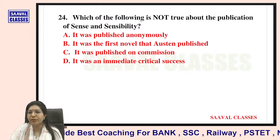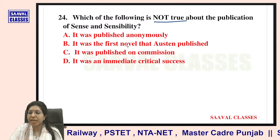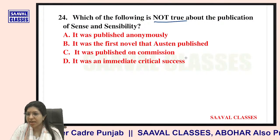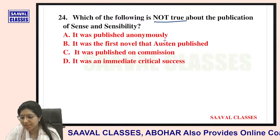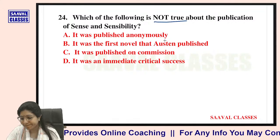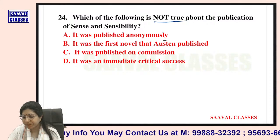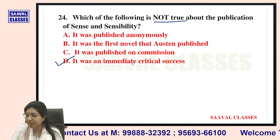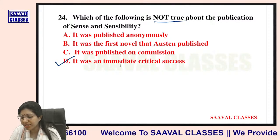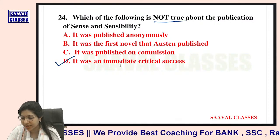Question number twenty-four: Which of the following is not true about the publication of Sense and Sensibility? Options: it was published anonymously; it was the first novel Austen published; it was published on commission; or it was an immediate critical success. The answer is that it was not an immediate critical success — Pride and Prejudice was the first truly successful novel.